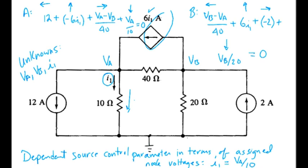So now we have three equations in three unknowns. And the final answer that we get from solving that system of equations is 40 volts for VA and VB. And it's minus.